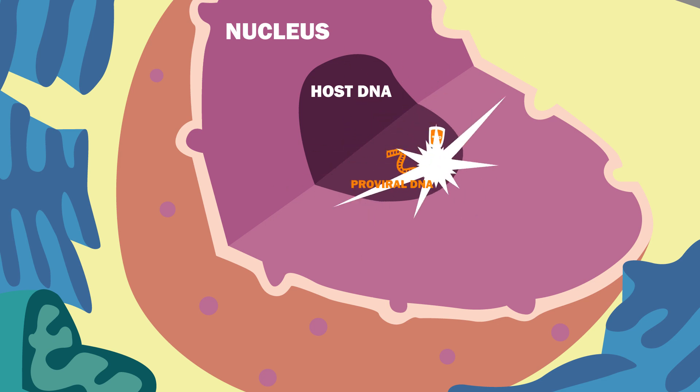This DNA is termed proviral DNA, and viral RNAs get transcribed from it. Many other retroviruses wait until mitosis, when the nuclear membrane is broken down, to get their genome integrated.